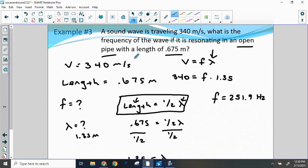So a sound wave that's traveling 340 meters per second in an open pipe with length of 0.675 meters will create a 251.9 hertz sound wave when set into motion.